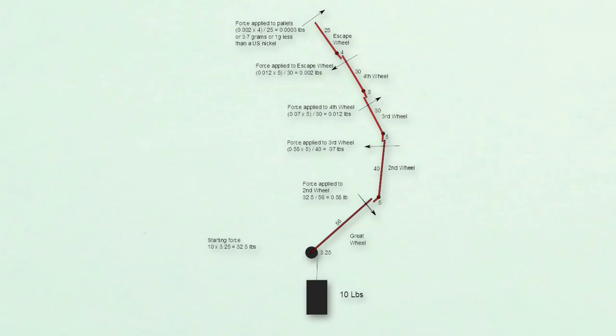I've calculated the torque or pressure applied to each wheel starting with a 10-pound driving weight all the way up to the escape wheel. The final force available at the escape wheel to drive the pendulum after the force of a 10-pound weight is converted to rotational speed through the going train is 1.4 grams. That's less than the weight of a US nickel. This is not much force to keep the pendulum moving.